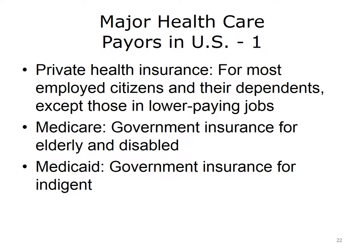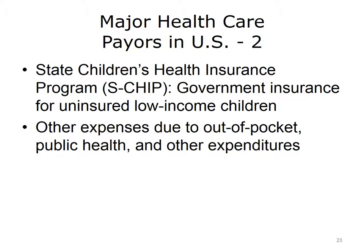With regards to health care systems, let's talk about health care payers in the U.S. Payers are the entities that take money and pay health care provider organizations for care. The major type of payer continues to be private health insurance, particularly for those who are employed and their dependents. Medicare is government-financed insurance where the federal government is the payer for elderly and disabled individuals. Medicaid has historically been the government insurance program for the indigent, but is expanding substantially under the Affordable Care Act. There is also the State Children's Health Insurance Program (S-CHIP) for low-income children, and many out-of-pocket expenses for those with no insurance or partial coverage.